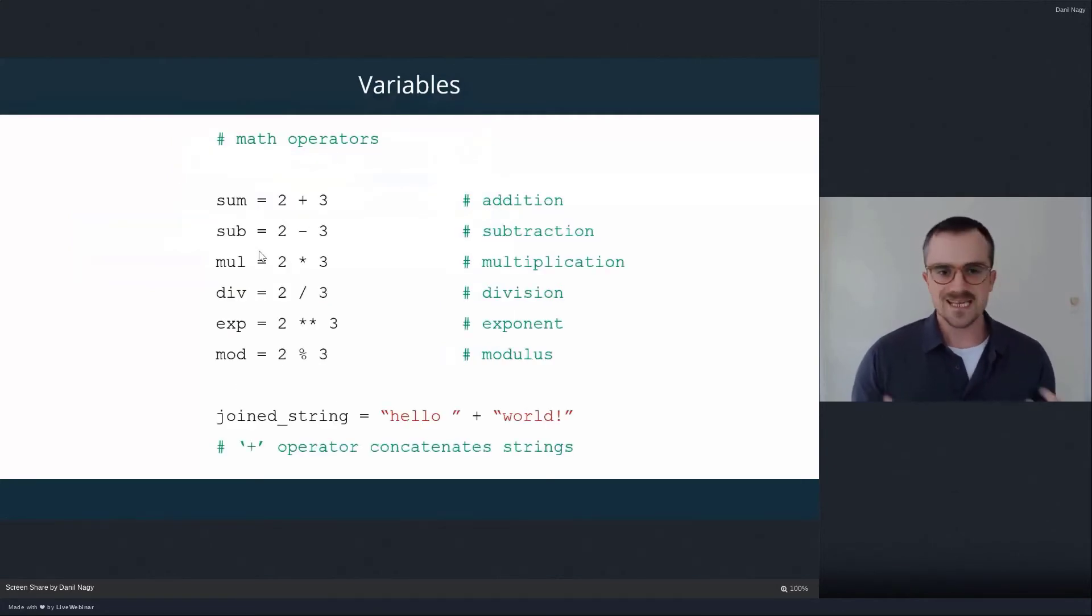So a few basic things you can do with variables. We have basic math operations. So we can do addition, subtraction, multiplication, division, exponents, modulus. If you're not familiar with modulus, it's basically the remainder after we divide the left-hand side of the equation by the right-hand side. And in Python, you know, the math operators are what you would expect, but these are typical symbols for them.